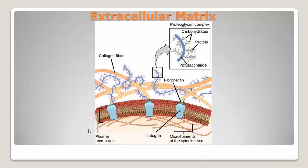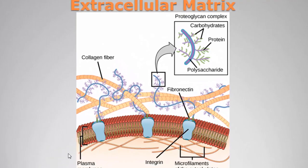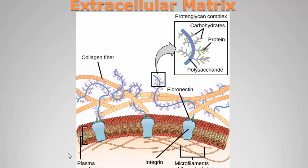Matrix metalloproteinases — the word itself says 'matrix,' which is nothing but the extracellular matrix. The extracellular matrix is very essential; it helps in cell-to-cell communication, the integrity between cells, cell migration, tissue addition, and many other functions that are very essential for our body.